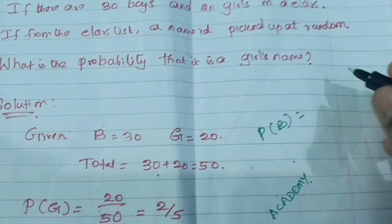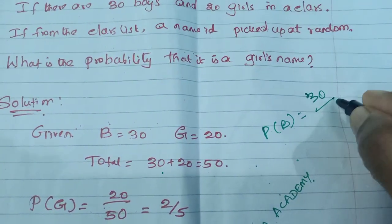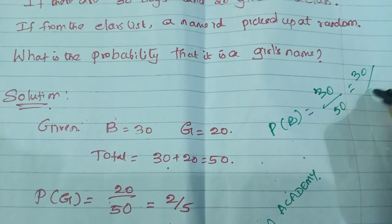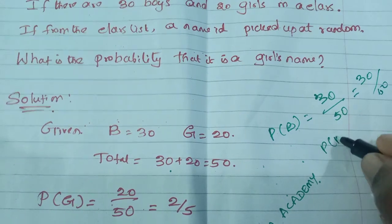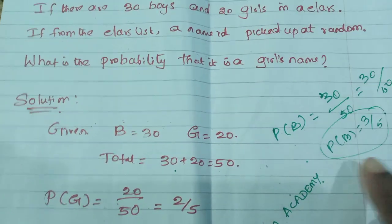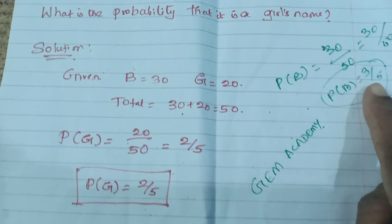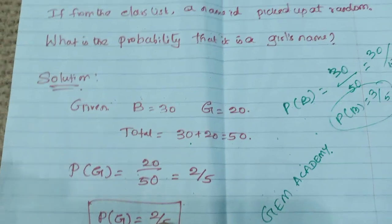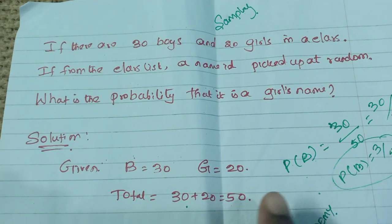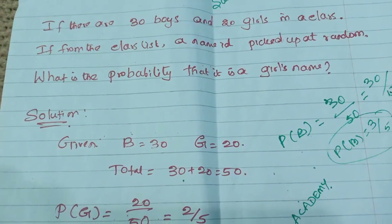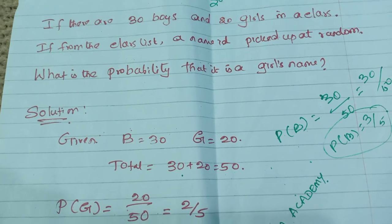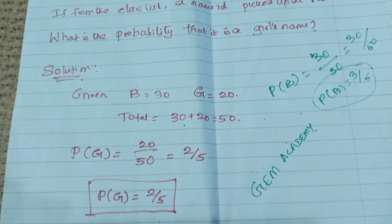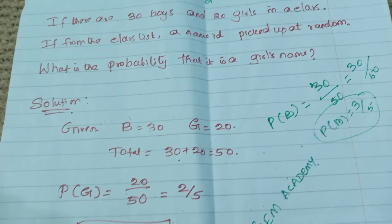Likewise, we can find the probability for boys. Total number of boys is 30, total number of students is 50, so probability of boys = 30/50 = 3/5. Probability for boys is 3/5 and probability for girls is 2/5. This is an important topic in CA/B ABM Module B — Business Mathematics. Thank you for watching this video, friends, and kindly subscribe to our channel.